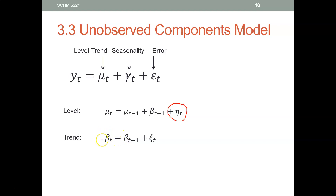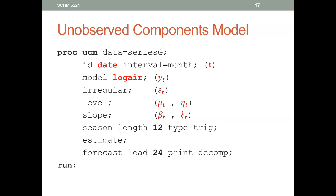How does trend work? This period's trend equals the previous period's trend plus some error term — some fluctuation. So trend can change from period to period.